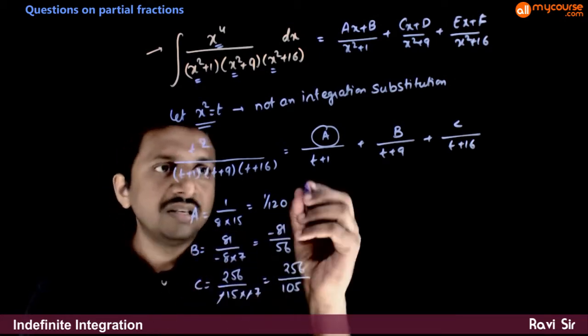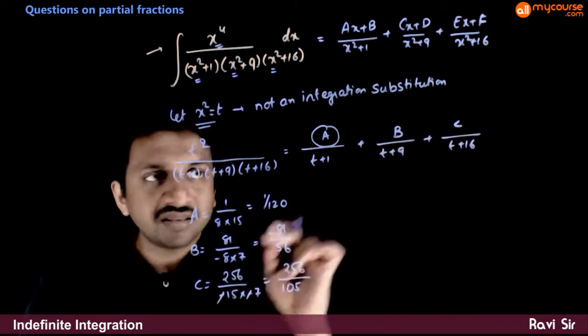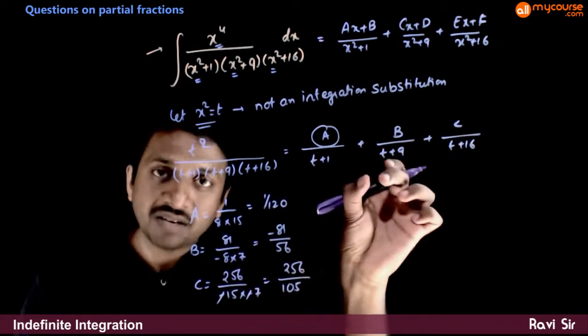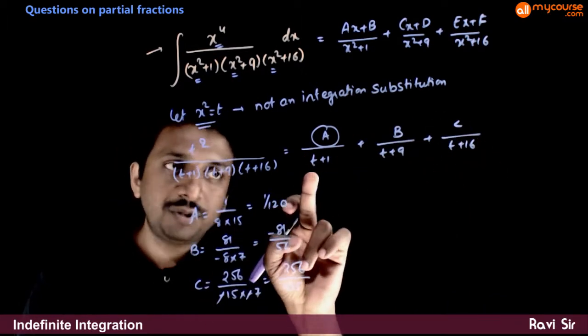These are the 3 numbers that you have. So the partial fractions are this, this and this. Once the partial fractions are done, back substitute t equal to x square.